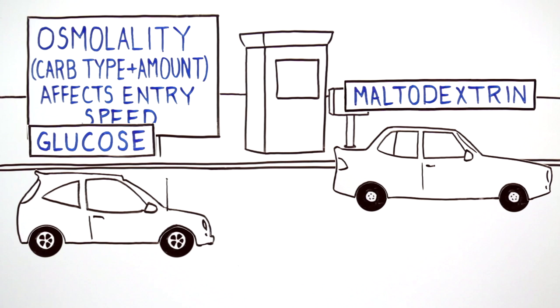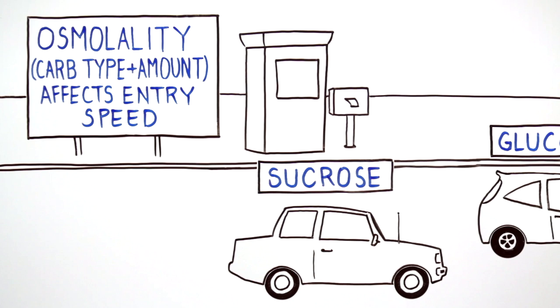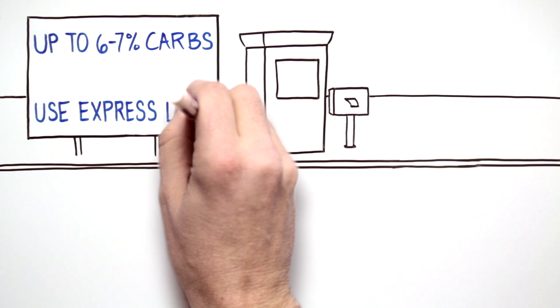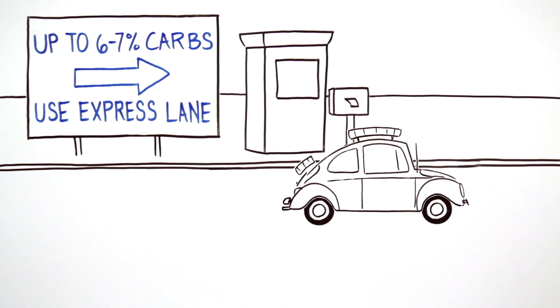Maltodextrin and the sugars glucose and sucrose are recommended because they quickly digest and absorb into the bloodstream. A beverage formulated with up to a 6 to 7 percent solution of these carbohydrates is shown to exit the stomach and absorb into the bloodstream as quickly as water.